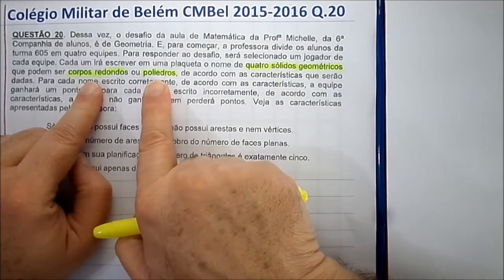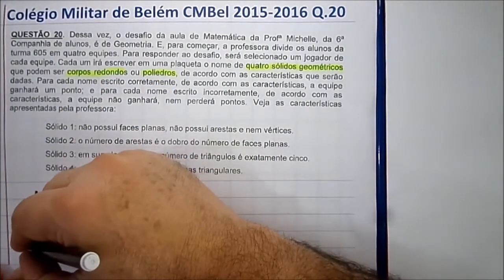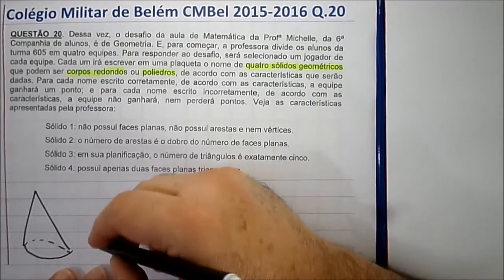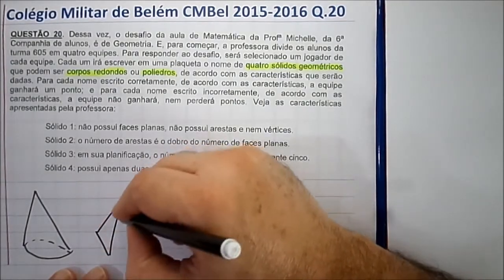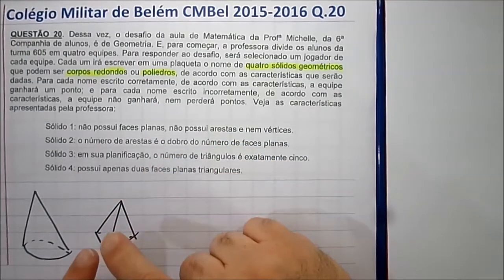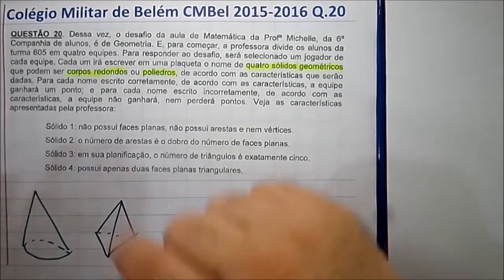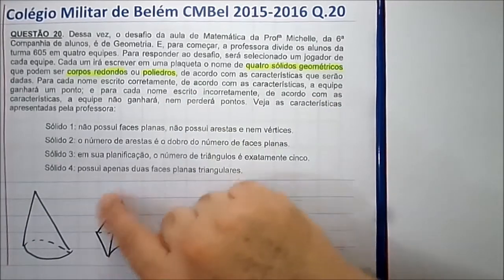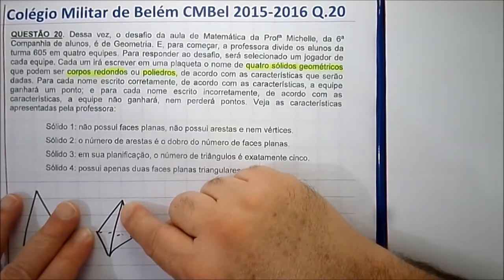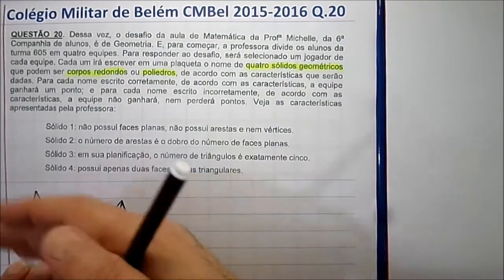Todos esses aqui são sólidos geométricos. Vou dar um exemplo de corpo redondo: o cone, por exemplo, é chamado corpo redondo. E um exemplo de poliedro é a pirâmide — uma pirâmide de base triangular. Isso aqui é um poliedro e isso aqui é um corpo redondo. Qual é a diferença? Os poliedros têm suas faces como sendo polígonos. Os corpos redondos não — eles têm faces arredondadas, que não são polígonos.